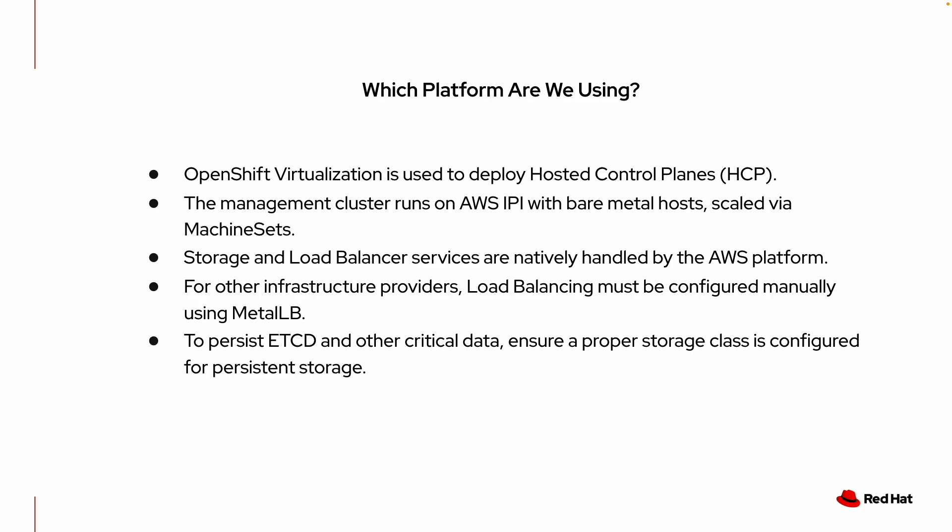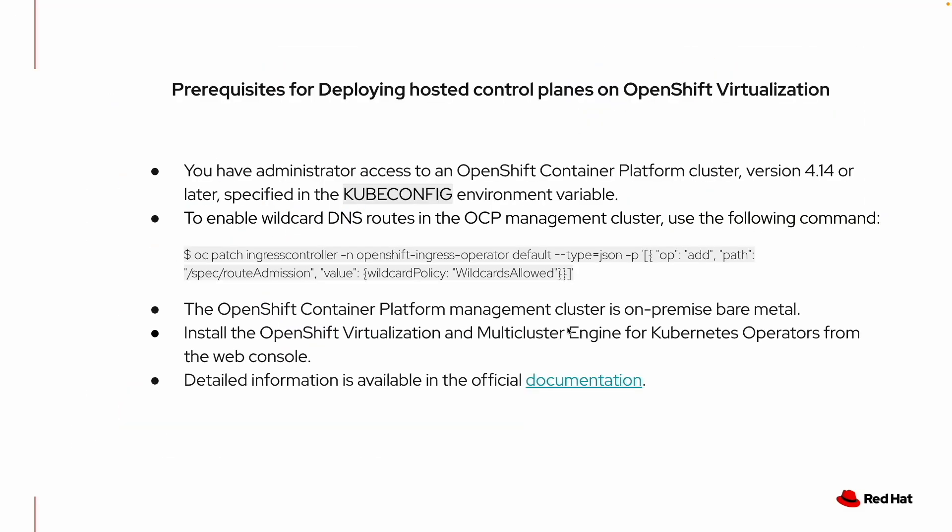The platform in focus today is OpenShift Virtualization, used to deploy hosted control planes. In this setup, the worker nodes run as virtual machines managed by the kubelet. The management cluster runs on AWS with bare metal hosts scaled via machine sets. Storage and load balancer services are handled by the AWS platform. For other infrastructure providers, load balancing must be configured manually using MetalLB. Persistent storage is essential for the etcd pods that will be created for HCP, and an appropriate storage class must be configured to preserve the etcd database and cluster-related data.